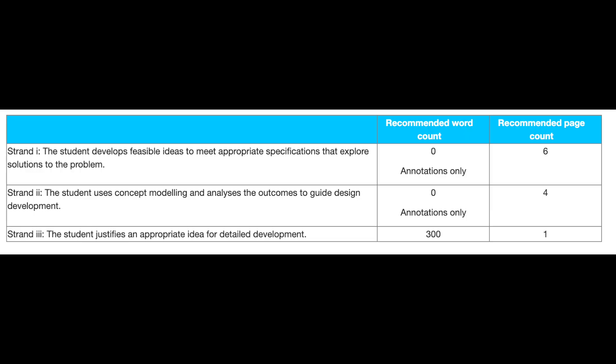Hi, this video is guidance for Criterion B Strand 1 of the DTIA. In this video we're going to help you understand how to develop feasible ideas to meet appropriate specifications and explore solutions to the problem. There's no extended writing in this particular strand — it's all images and annotations, and you have about six pages to work with.